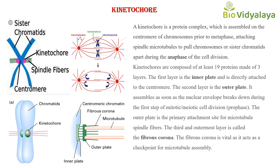The kinetochore is composed of at least 19 proteins and is made of three layers. These three layers are: the inner plate, the outer plate, and the fibrous corona. Looking at this picture, you can see the inner plate of the kinetochore, the outer plate, and the green lines representing the fibrous corona.